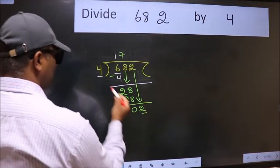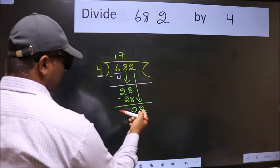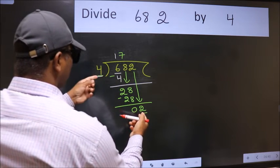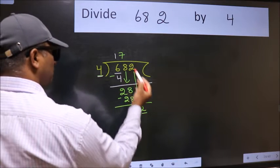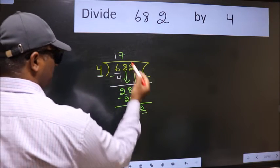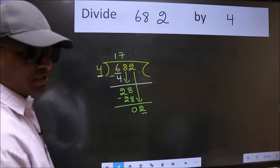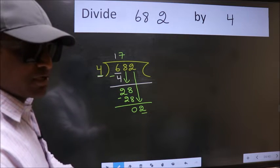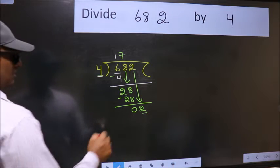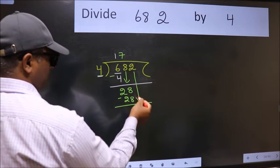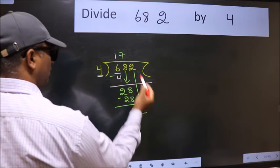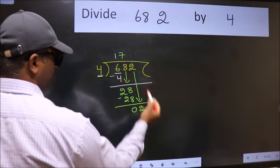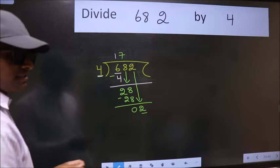Here we have 2 and here 4. 2 is smaller than 4. So what many do is they directly put the dot and take 0, which is wrong. Why is it wrong? Because just now you brought this number down, and in the same step you want to put the dot and take 0. Which is wrong.